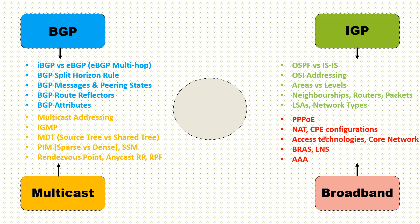You should know about CPE configurations — how to configure a CPE in bridge mode versus routed mode, the differences between them, and how traffic flows from the CPE into the access network or core network. Knowledge of access technologies like GPON for fiber-to-the-home or ATM for DSL connectivity is a bonus. You should also know about the core network in terms of broadband, specifically the BNG and LNS used for terminating customers in the core.